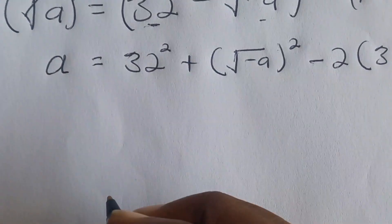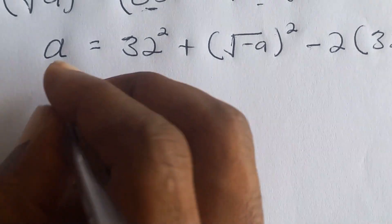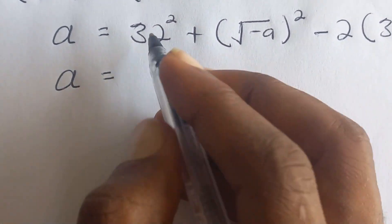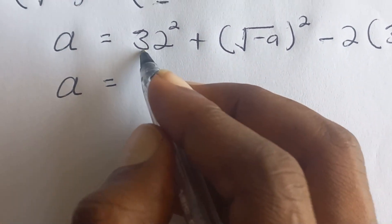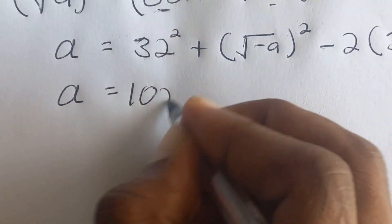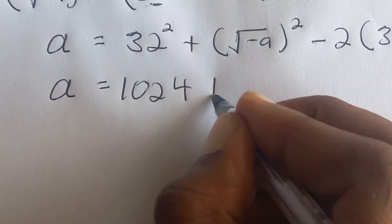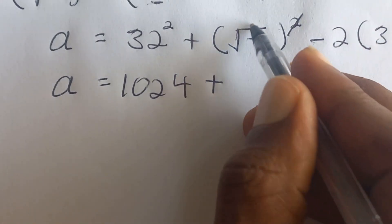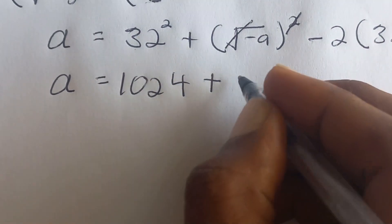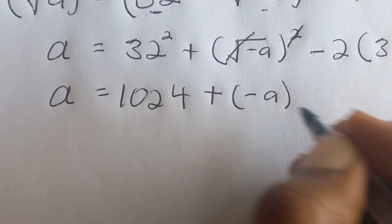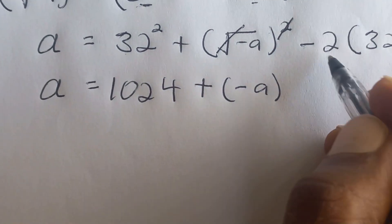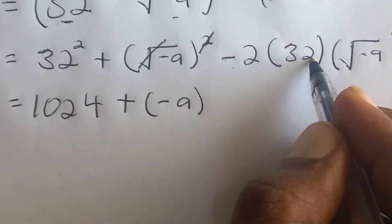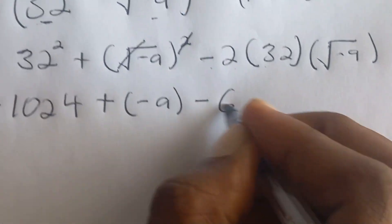Let us simplify the right side. We have a equal to: 32 squared is 1024, plus this square root of negative a squared gives negative a, and then negative 2 times 32 times square root of negative a.